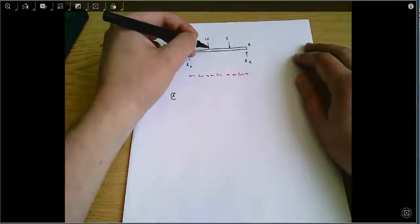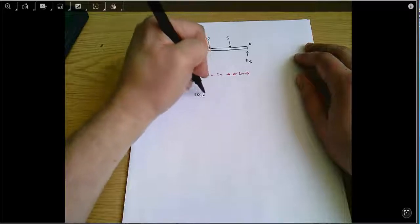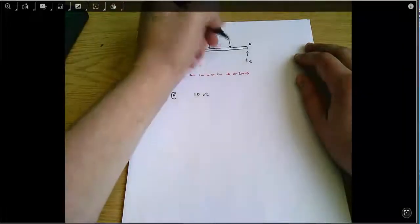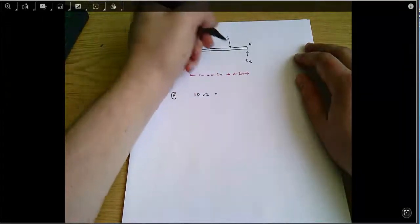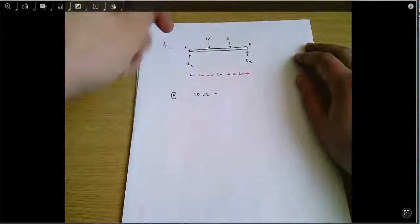This force is 2 metres away and it's creating a clockwise moment, so that gives me 10 times 2. This one is 4 metres away, also creating a clockwise moment—the whole thing's moving that way when pushed by this force or this force.